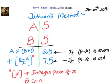Suppose we have to multiply two numbers of the format A5 multiplied with B5, something like 25 into 35. Our answer can be divided into two parts. One part will be equal to 25 or 75 depending upon whether B minus A is even or odd.